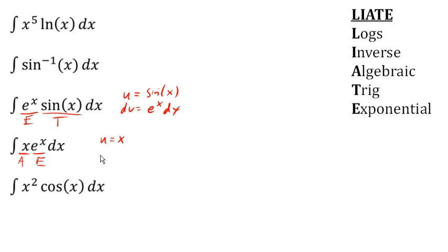In the last example here, we have x squared, which is algebraic, and cosine x, which is trig. So we'll let u equal x squared, and dv equal cosine x dx. Alright? So that's how we can use LIATE to help us identify our u and our dv in integration by parts.